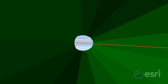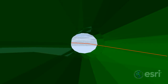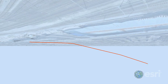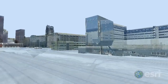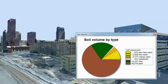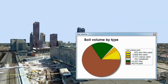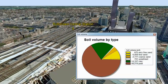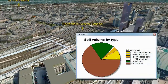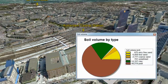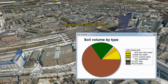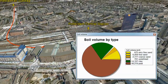The end result that we're after is to summarize by soil type to get a good indication of how much of each soil type needs to be removed. As you can see here in the graph, peat is the largest volume, followed by clay and then sand.